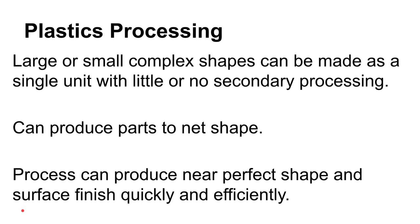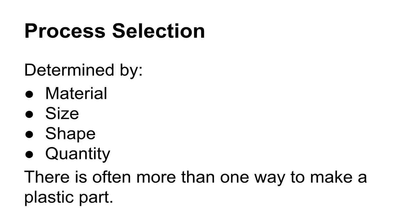We'll look at some broad general classes of manufacturing processes for plastics. In general, you can make large or small shapes, and they can be net shapes — meaning the parts don't need additional processing. Once you have a mold that works, all the detail comes for free after the mold is built. It's not like machining metals where you have to machine in the detail each time.